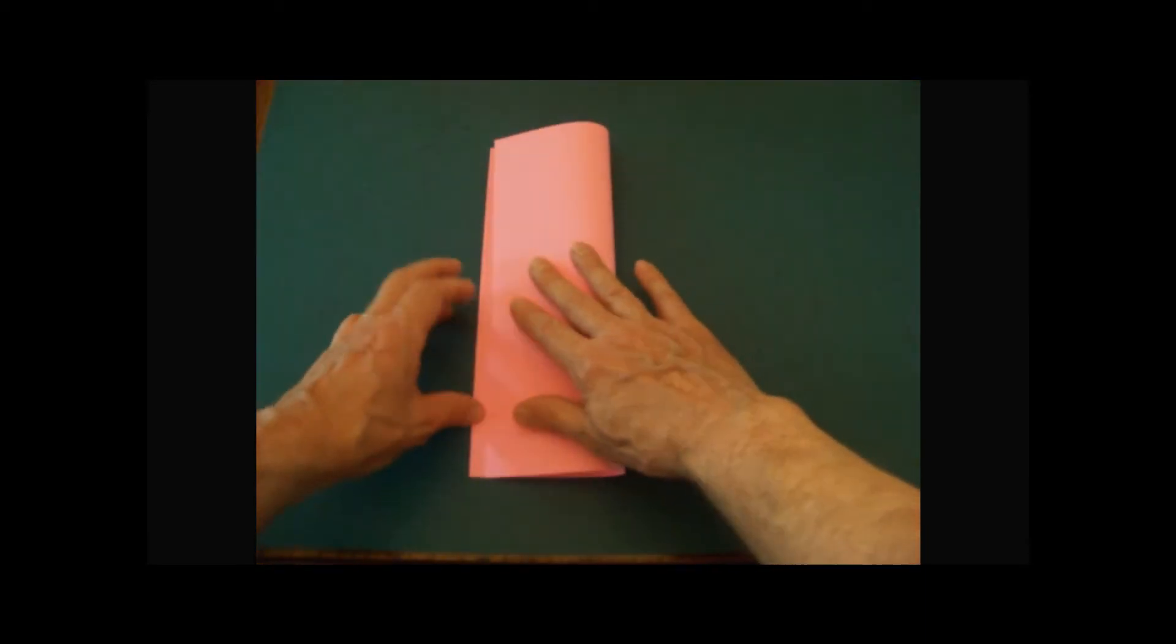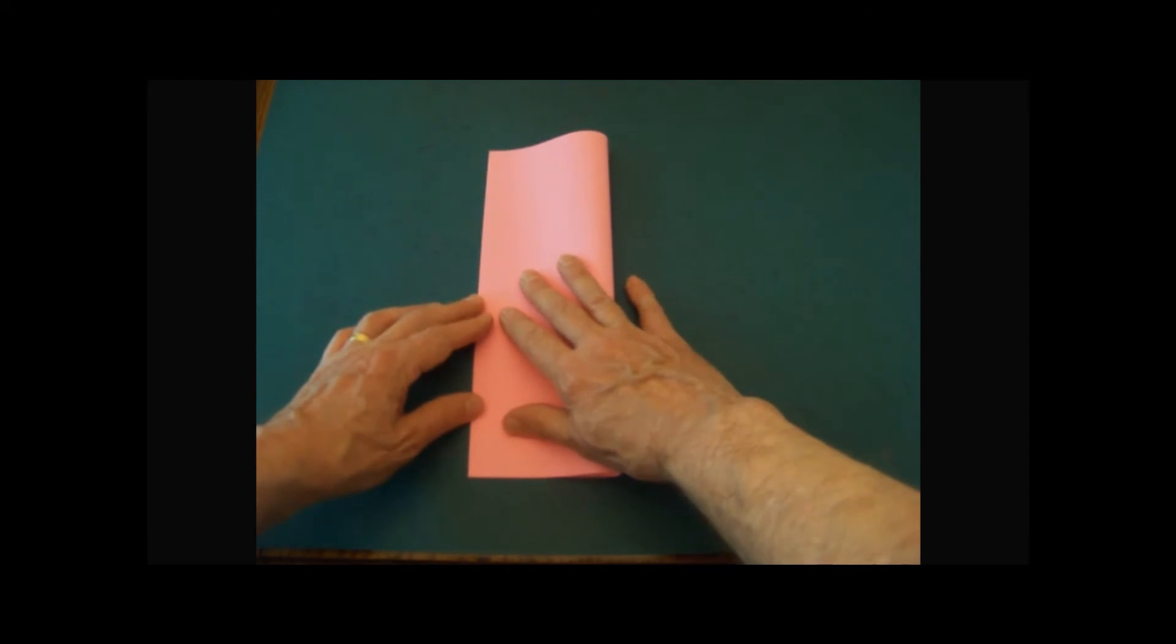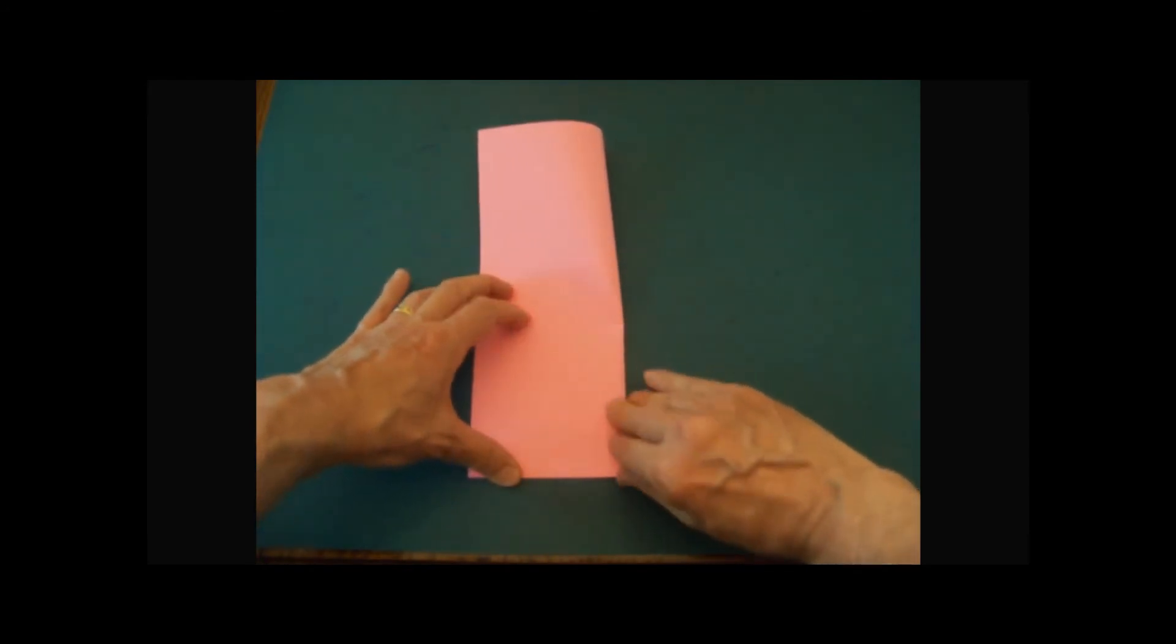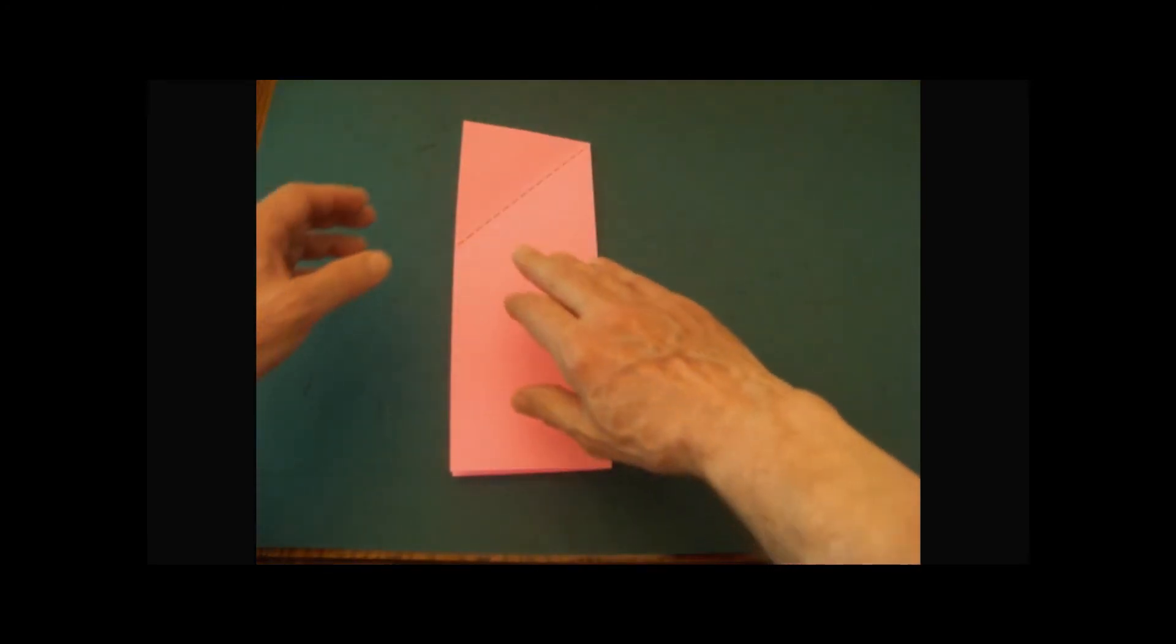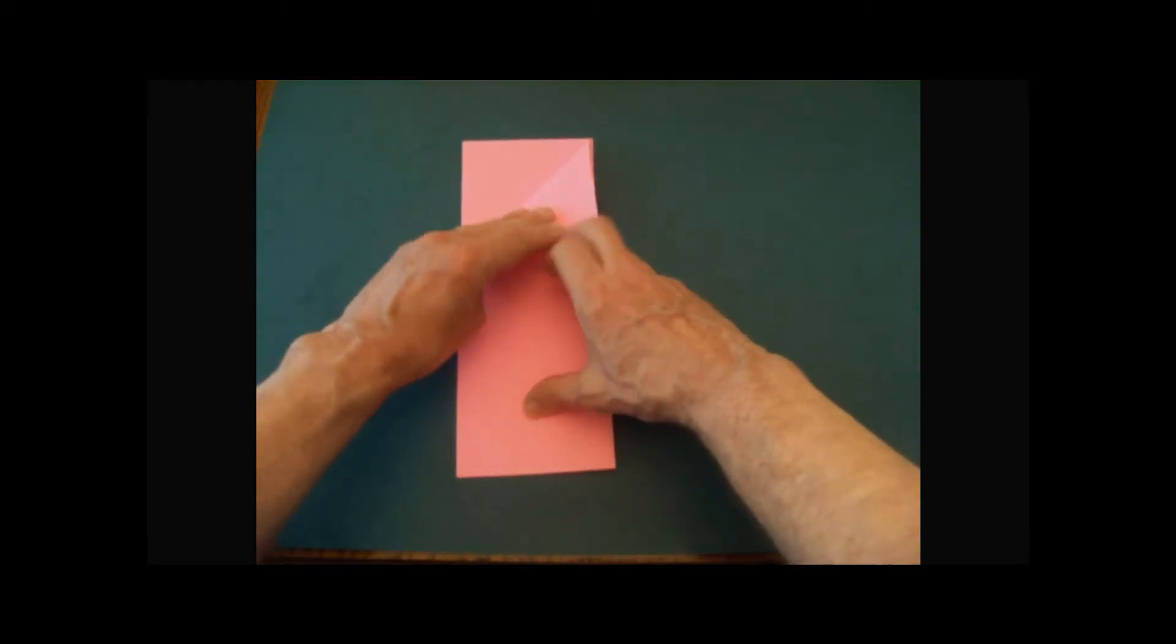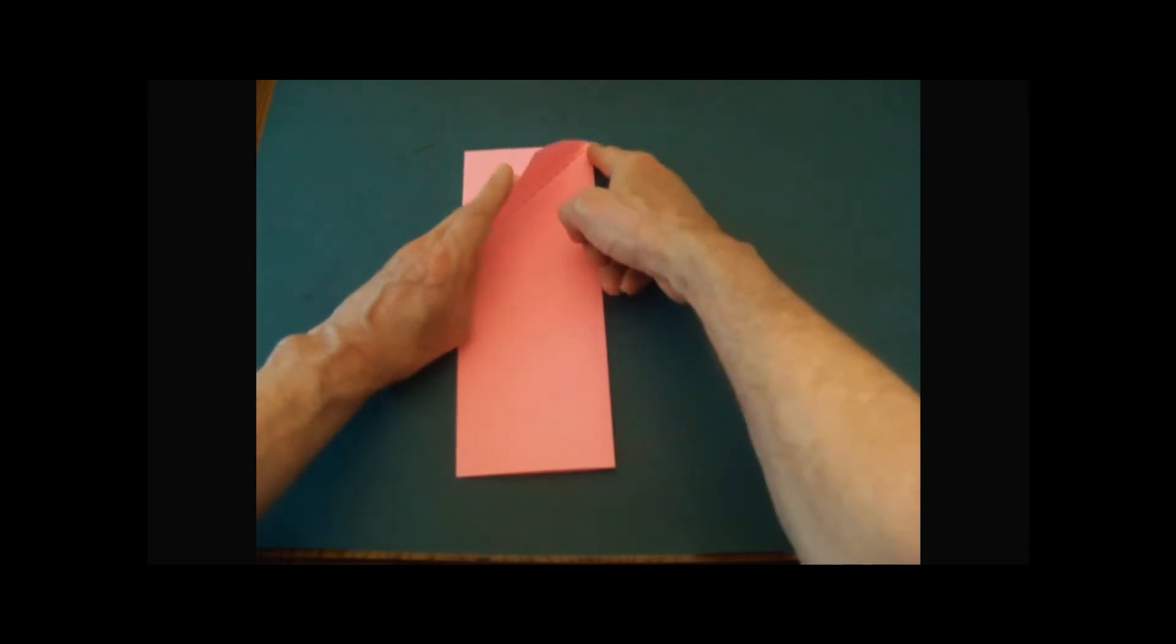Fold the paper in half along the longest side. Fold a diagonal so that the top edge of the paper meets the folded side.